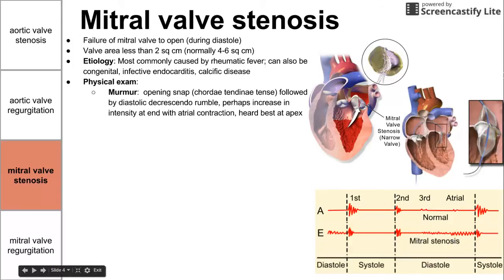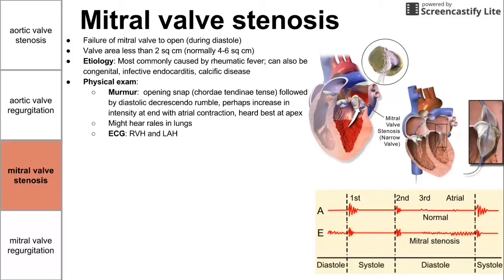This murmur is heard best at the apex of the heart. You might hear rales in the lungs, again corresponding to pulmonary edema. On the ECG, we see right ventricular hypertrophy and left atrial enlargement. We do not see left ventricular hypertrophy on the ECG, and that's pretty characteristic of mitral valve stenosis — it helps differentiate it from the other diseases discussed here.